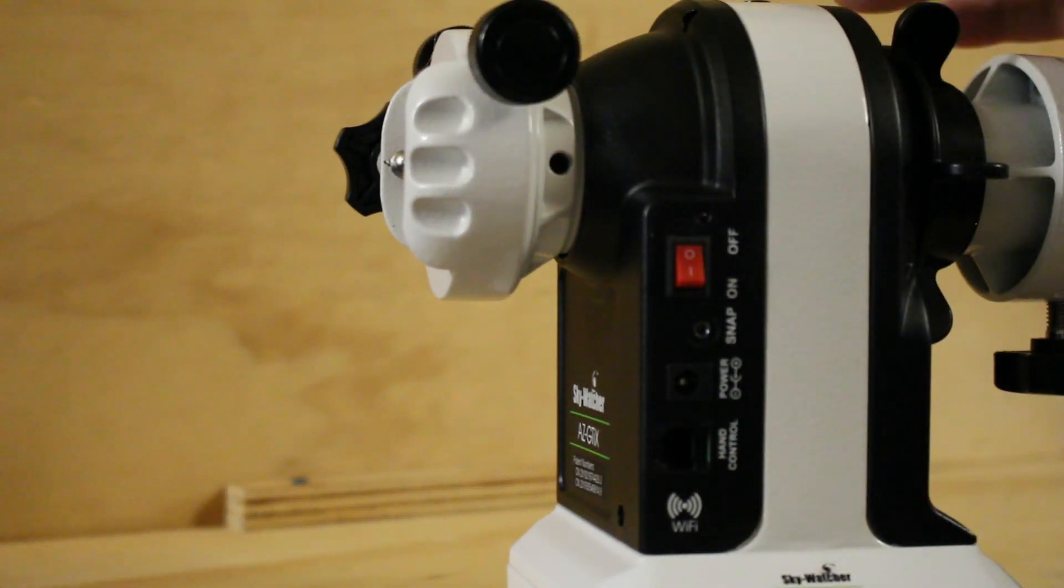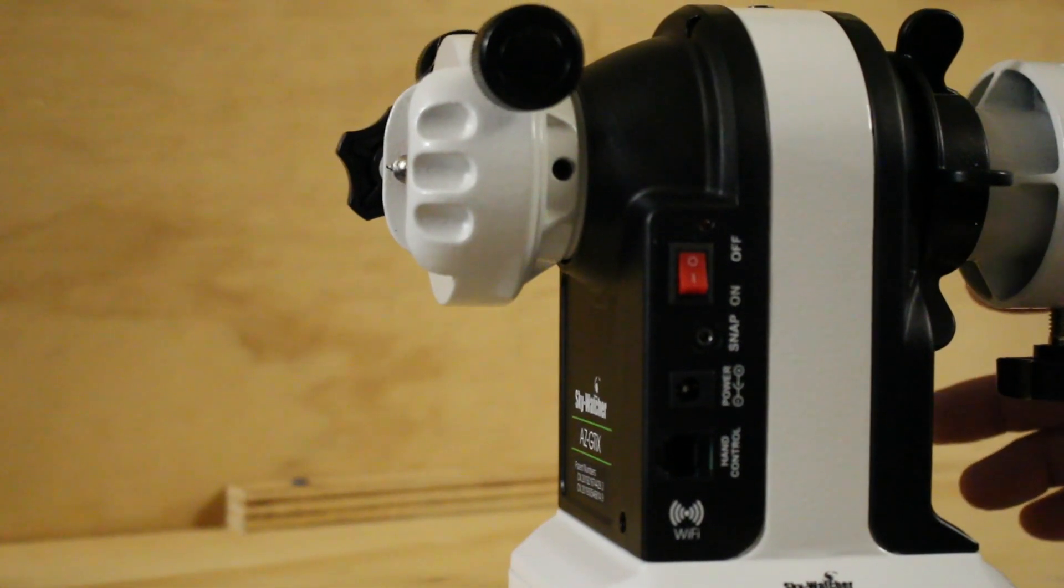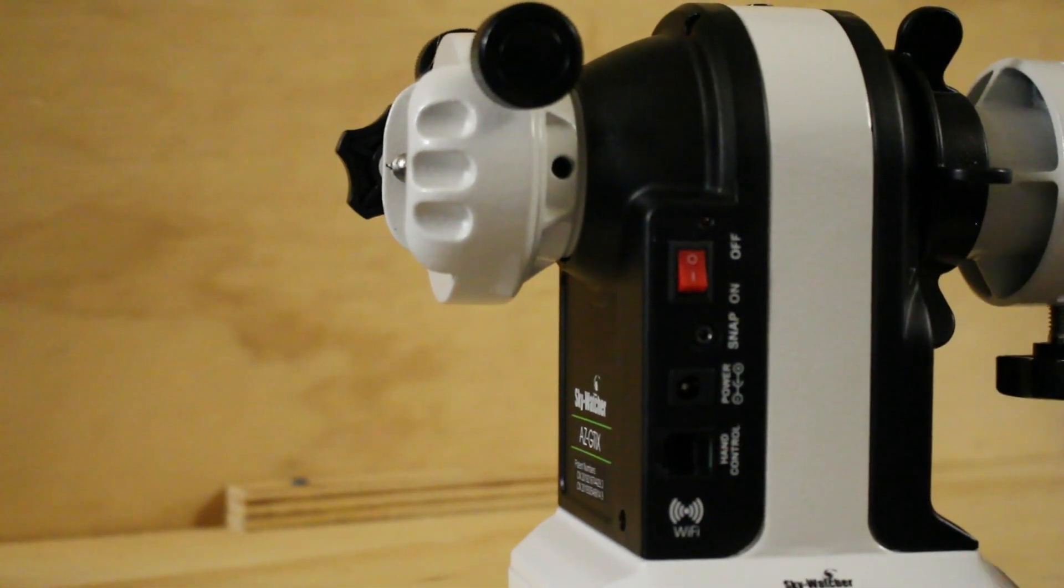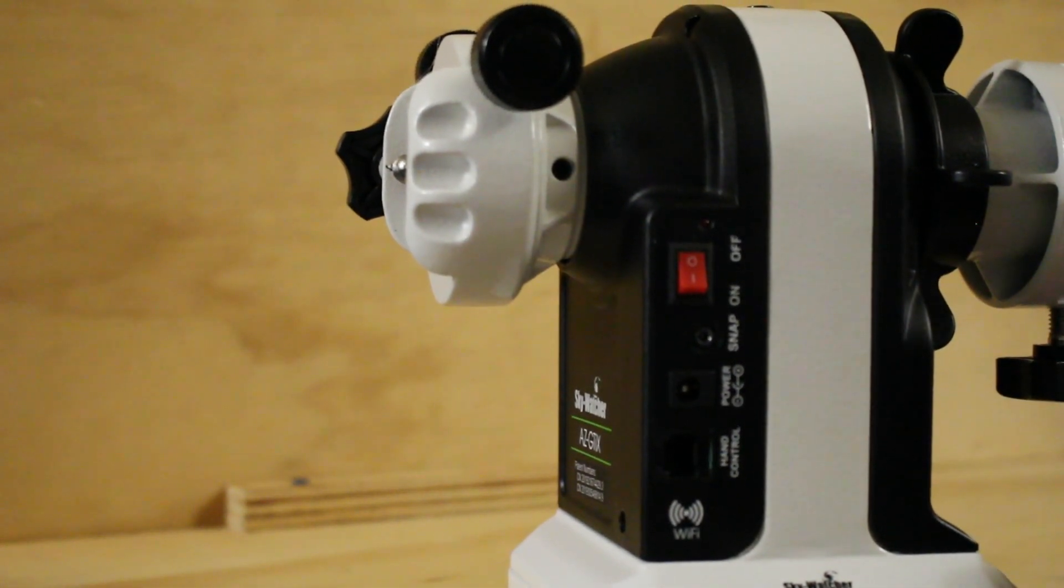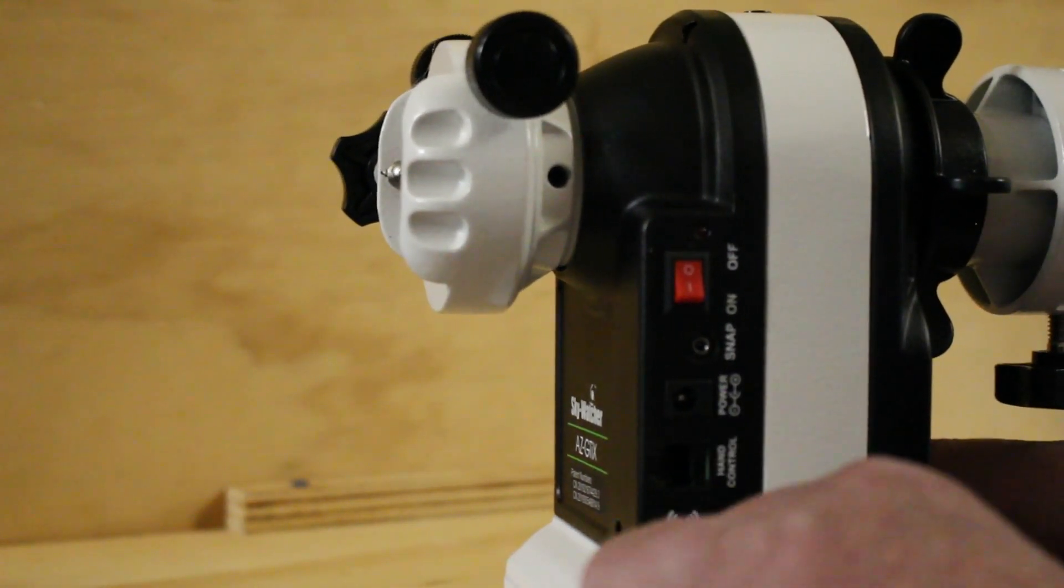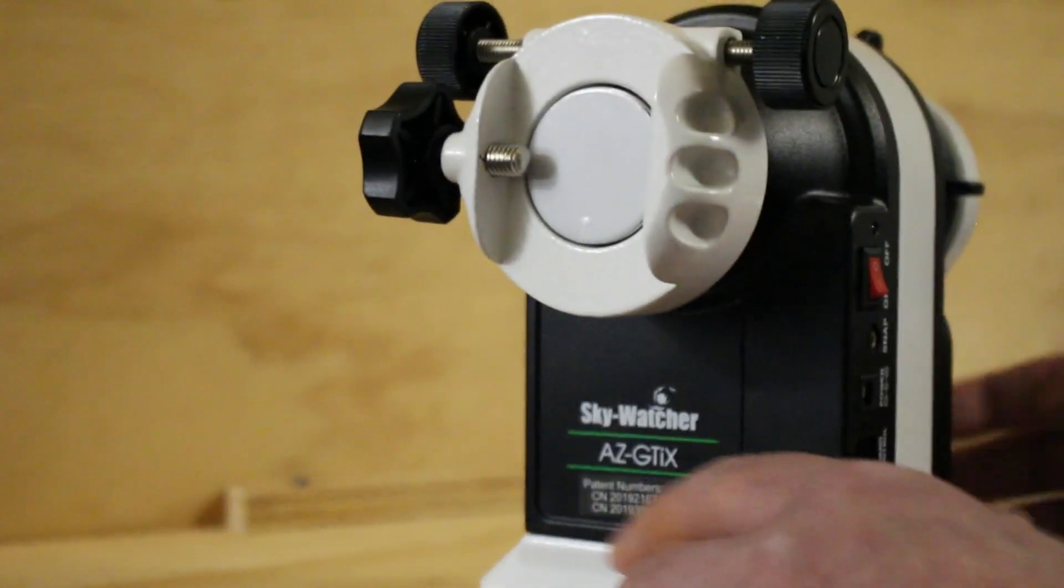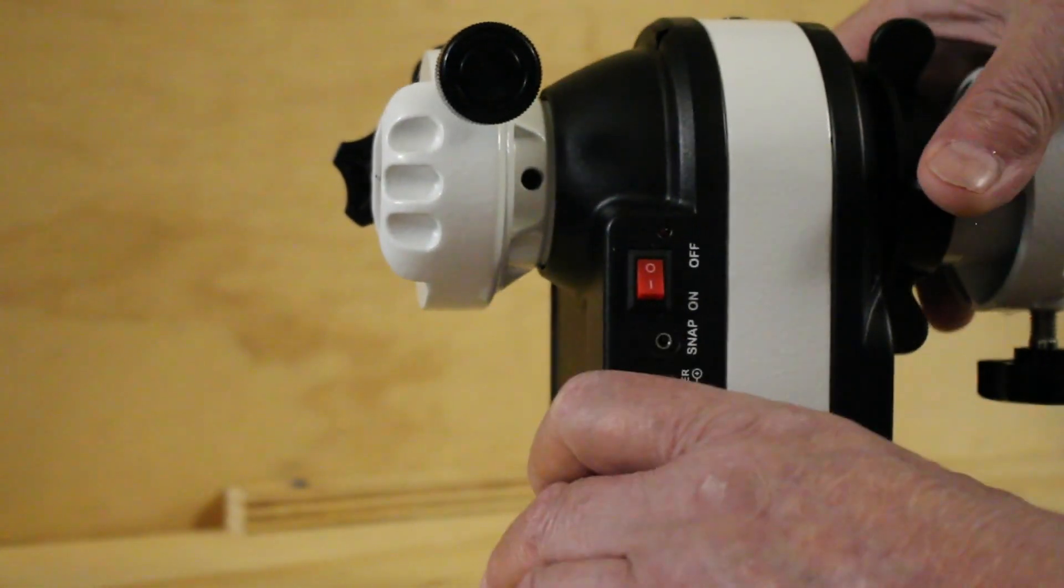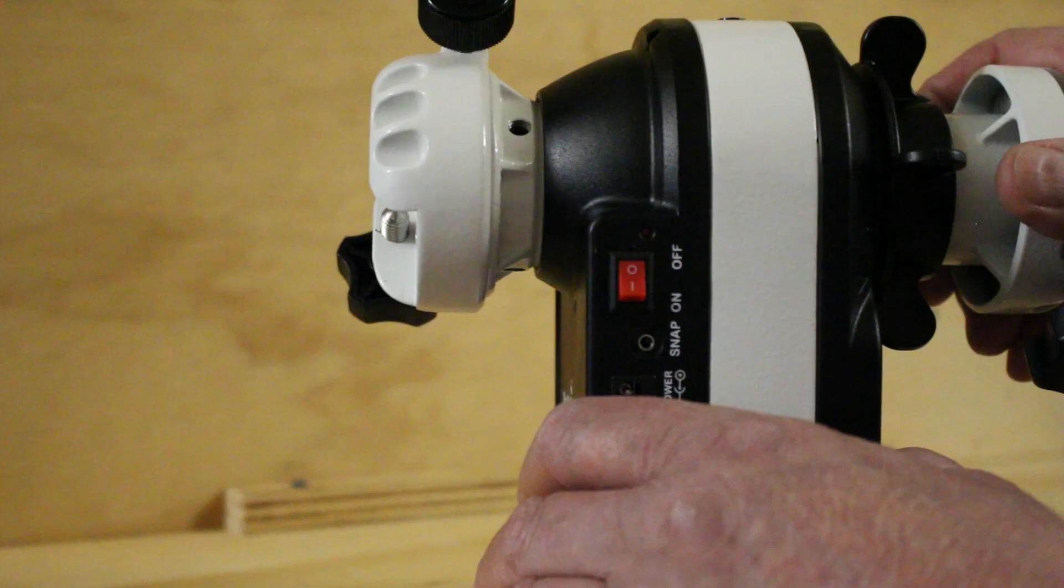It's got dual encoder technology and they call that Freedom Find. We loosen up the azimuth and you can turn it, you can loosen up the clutches, change the altitude, and it supposedly remembers what you were aiming at in the first place.